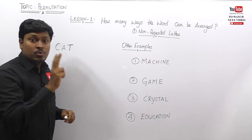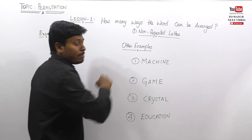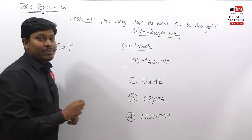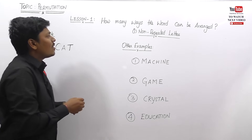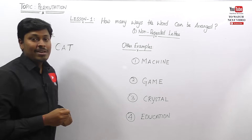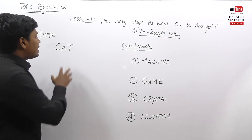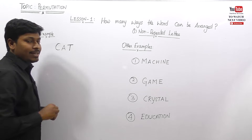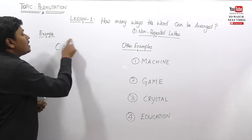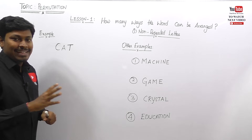This lesson number one is separated into two categories: category one, which is non-repeated letters, and category two, which is repeated letters. Now let's concentrate on the topic of non-repeated letters. Assume that the word CAT is given and they are asking how many ways this word CAT can be arranged.